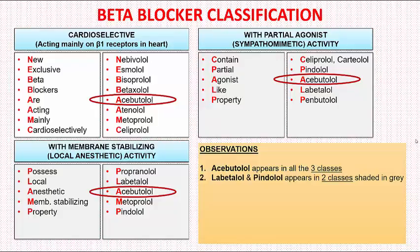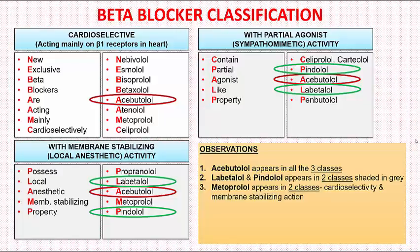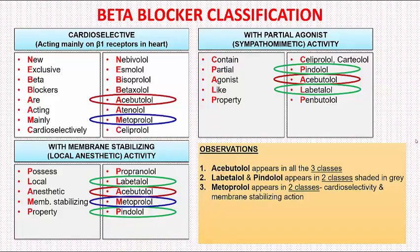Labetalol and pindolol appear in two classes — they have partial agonistic activity and membrane stabilizing activity, but they are not cardioselective. Metoprolol also appears in two classes: it is a cardioselective drug and has membrane stabilizing action. We can remember this by the letter M — metoprolol starts with M and membrane stabilizing also starts with M.